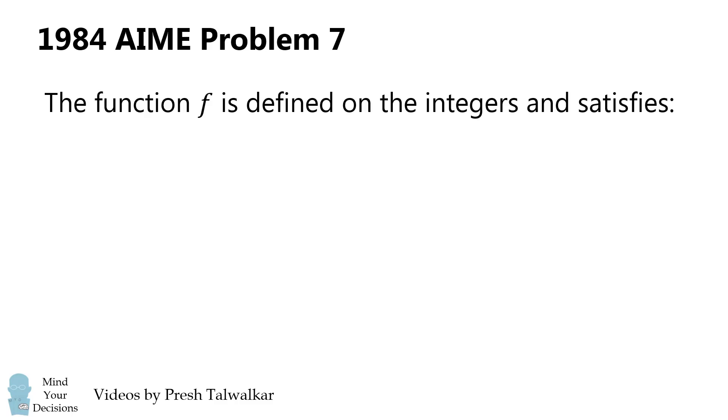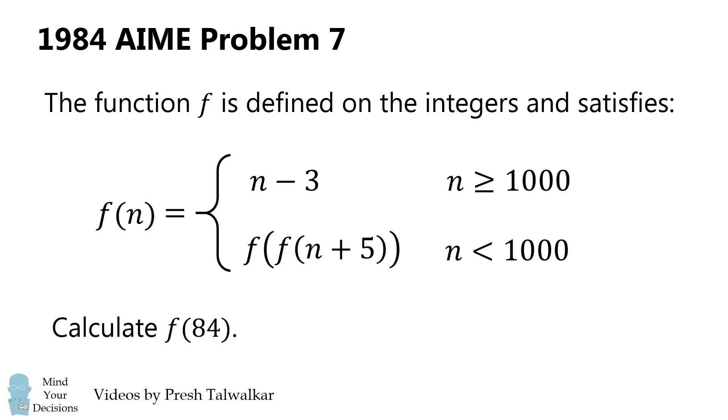The function f is defined on the integers and satisfies f of n is equal to n minus 3 if n is greater than or equal to 1000, and it's equal to f of f of n plus 5 if n is less than 1000. The question is what is f of 84?